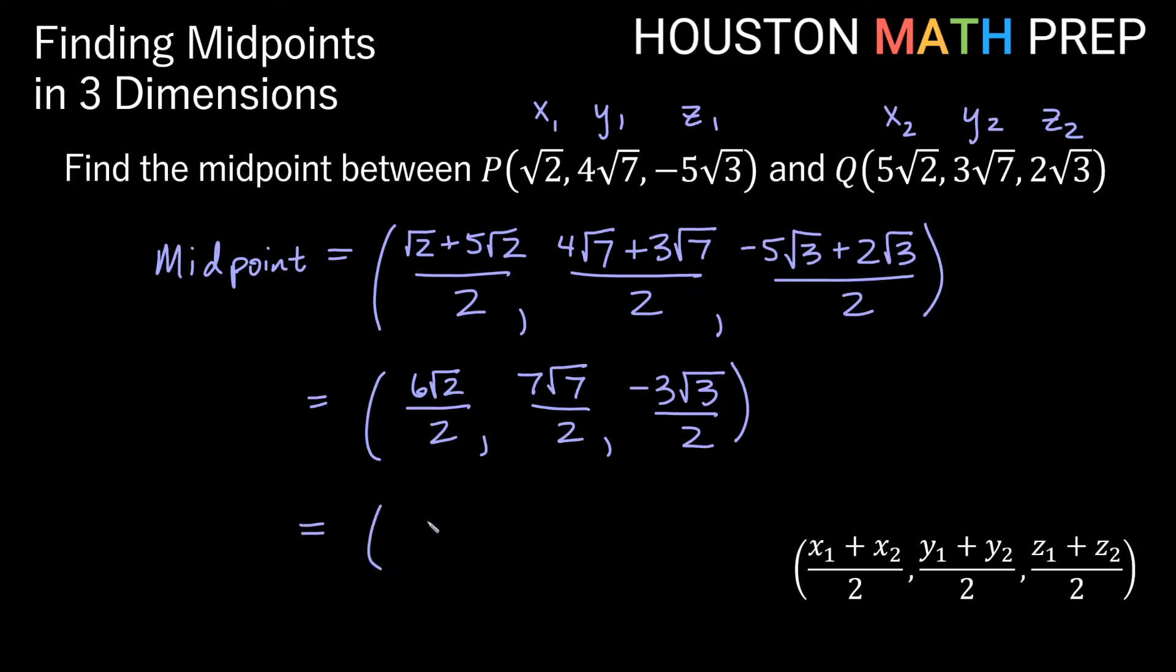So our x coordinate here we would say is just 3 root 2 because 6 divided by 2 is 3 on the outside here. The other things have to stay a fraction, so I'll leave the 7 root 7 over 2 and the negative 3 root 3 over 2 as well.